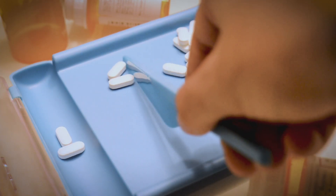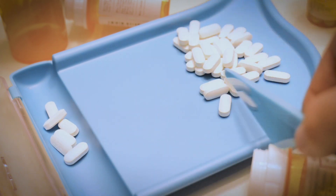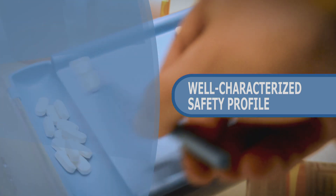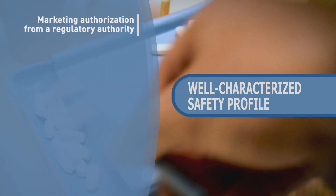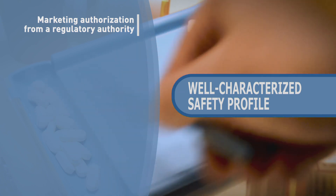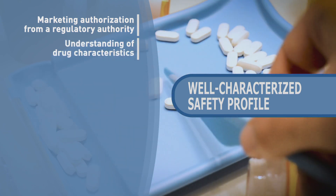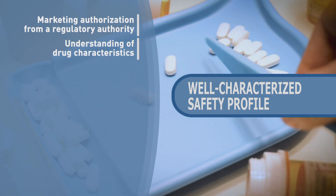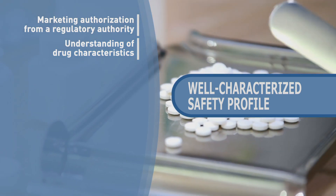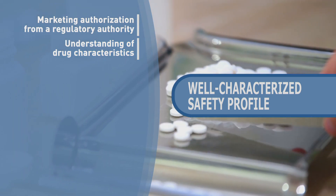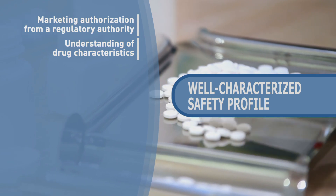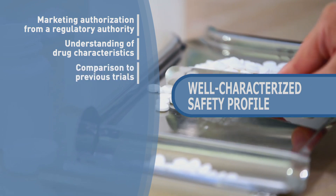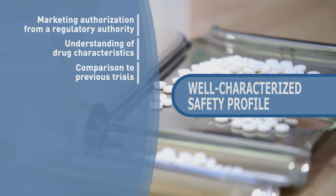There are many factors to be considered when deciding if a drug's safety profile is well characterized. Some of these factors are whether the drug has already received marketing authorization from a regulatory authority, how well certain characteristics of a drug are already understood — like the drug's mechanism of action, characterization of off-target effects, the safety profile for other drugs in the same class, drug interactions, and drug metabolism and excretion.